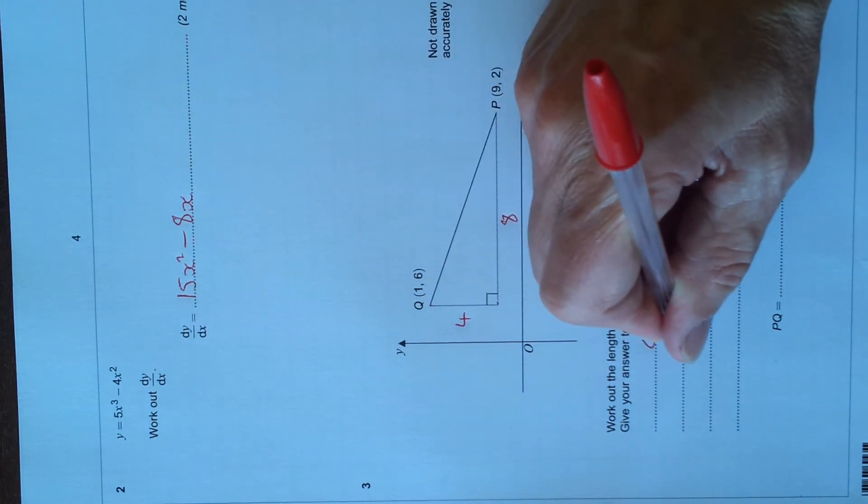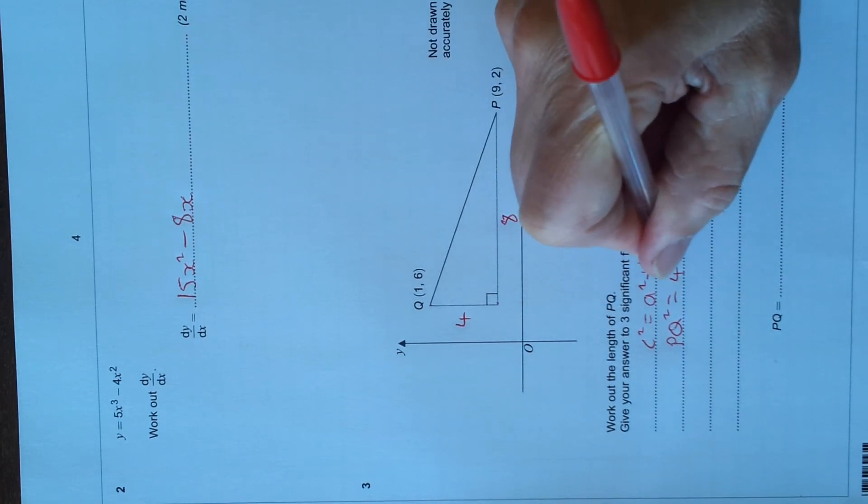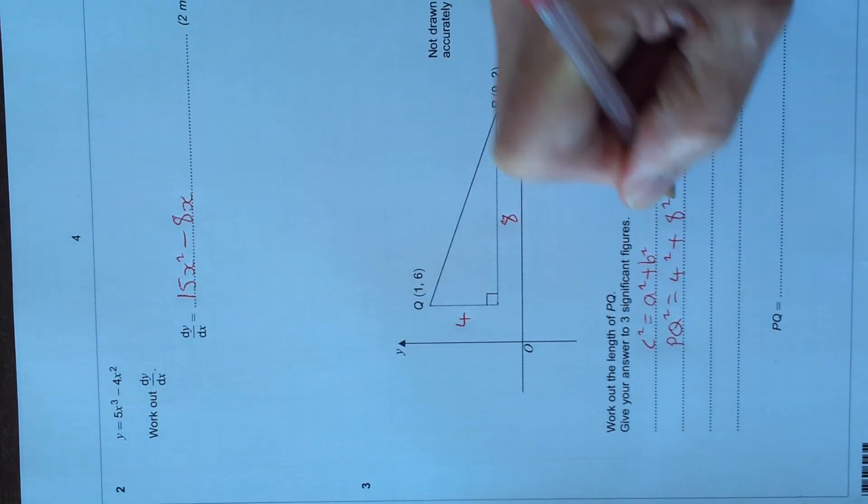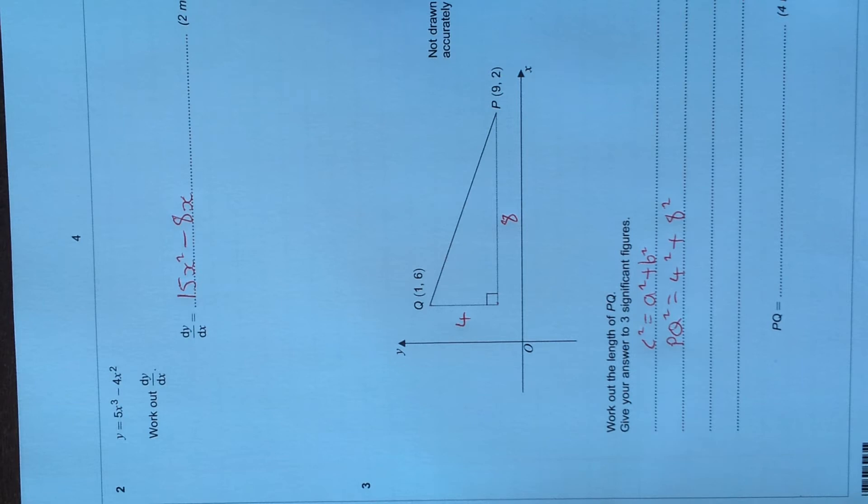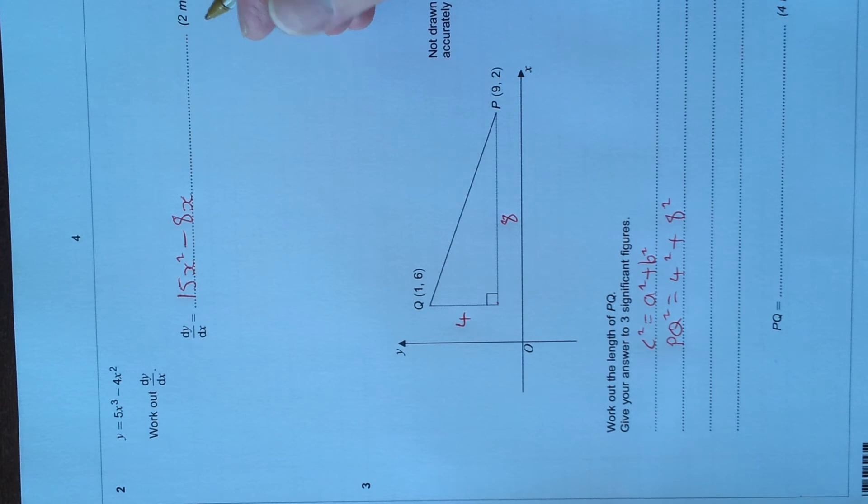c² is PQ in this case. PQ² equals 4² plus 8². a and b can be either way, doesn't matter. Right, I'll go straight ahead and work the next part out before I put it in the calculator.